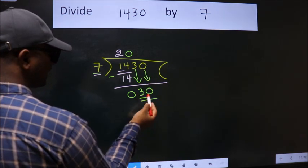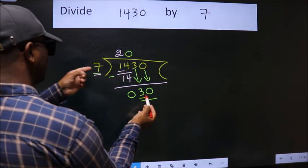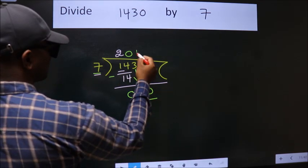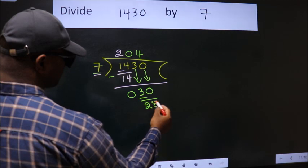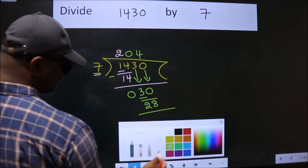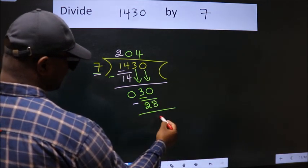So 30. A number close to 30 in the 7 table is 7 fours, 28. Now we subtract. We get 2.